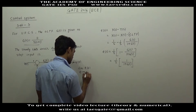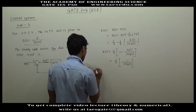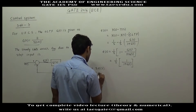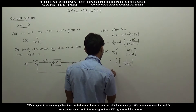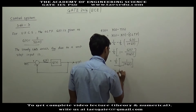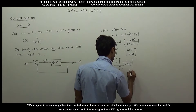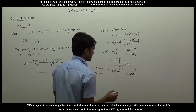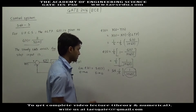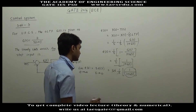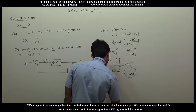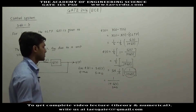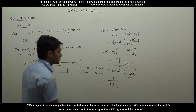To find the steady-state error — the value of e(t) as t tends to infinity — we apply the final value theorem: limit as s tends to 0 of s·E(s). So s·E(s) = 1/(1 plus G(s)), the s cancels, and we basically have to find 1/(1 plus G(s)) when s tends to 0.